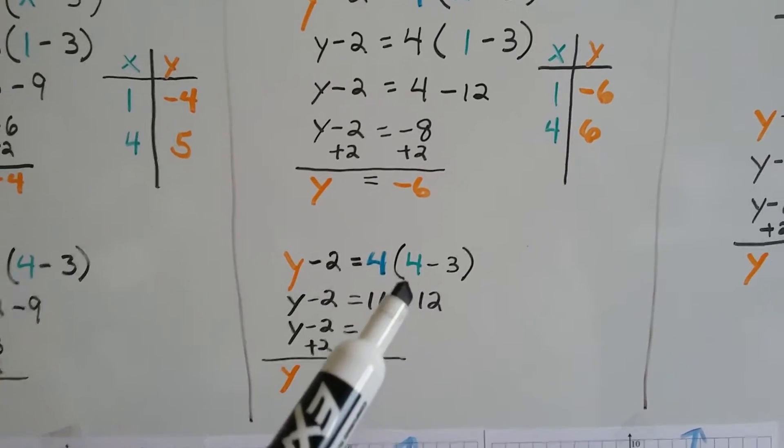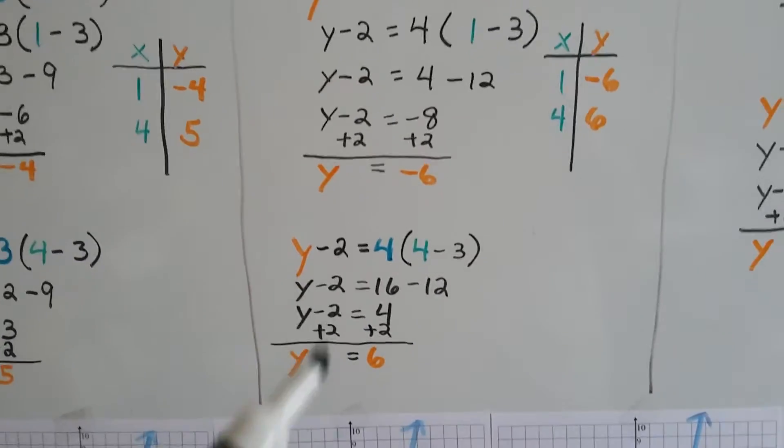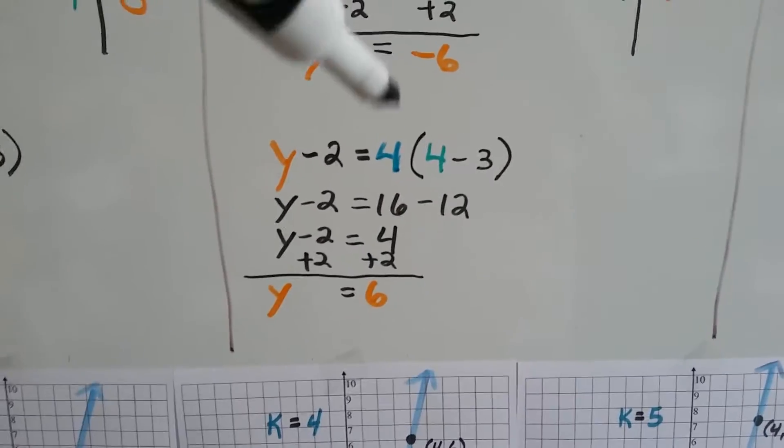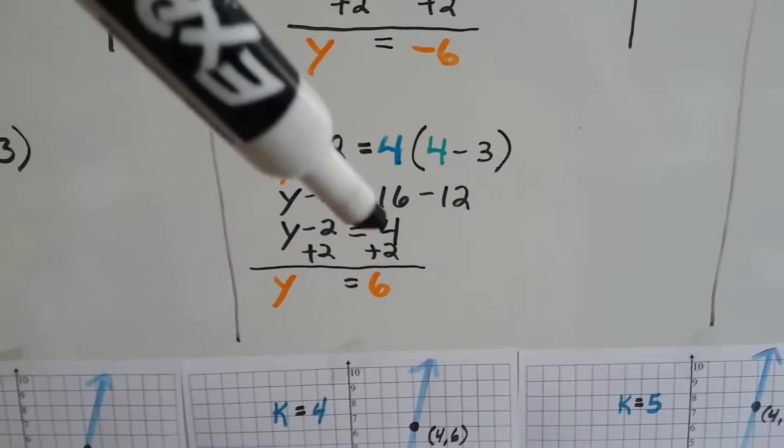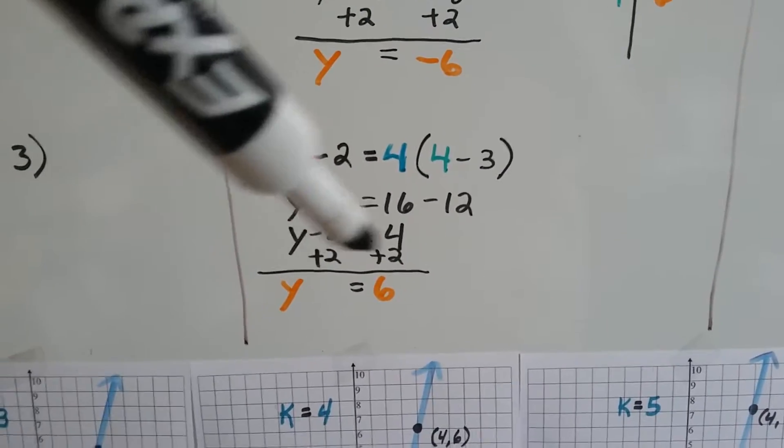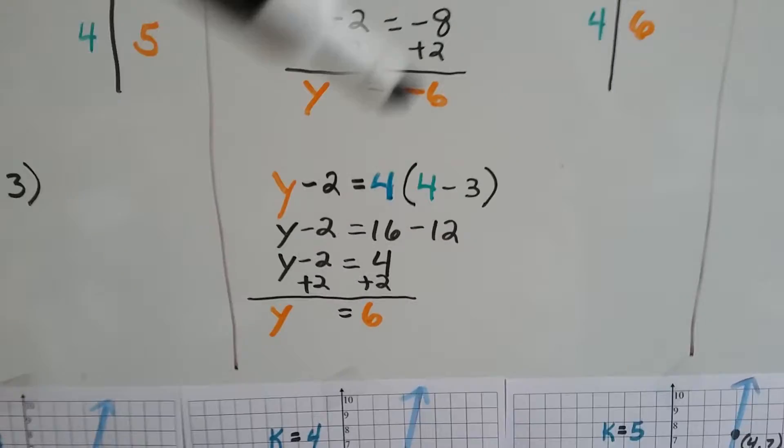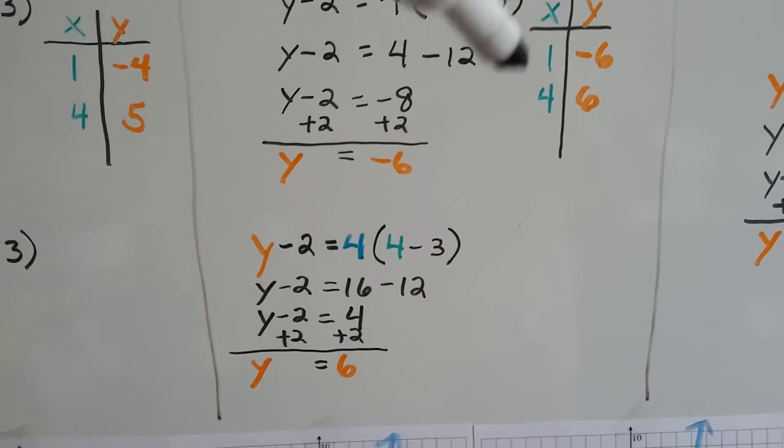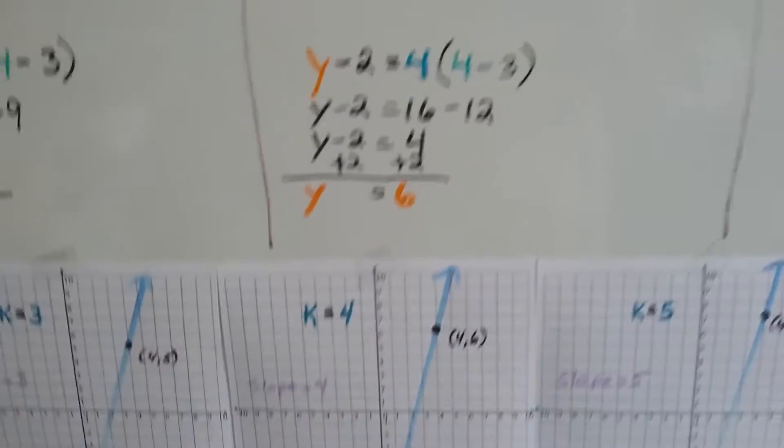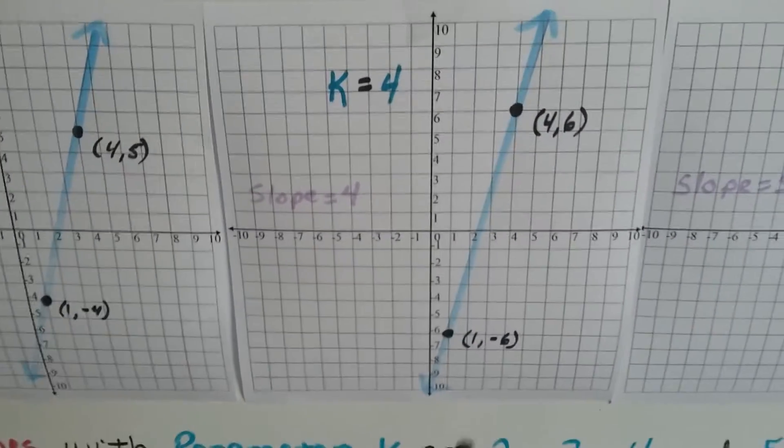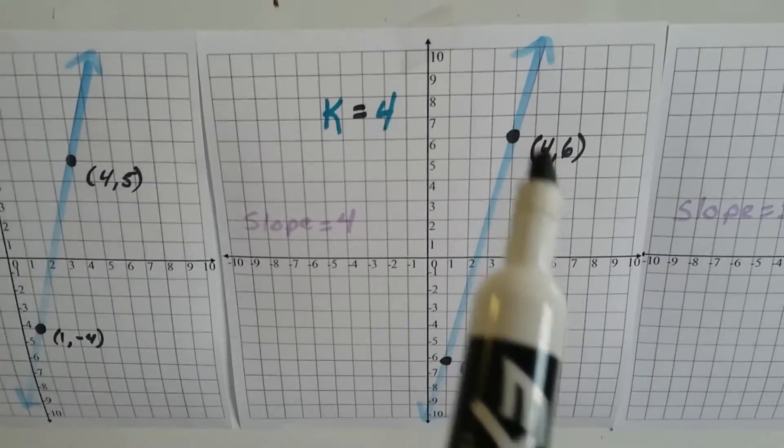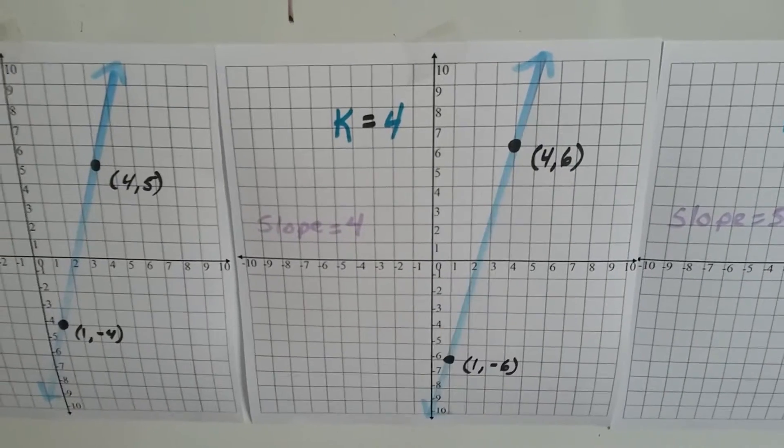I'm going to do it again and set x to equal 4, just like we did in the other ones. We're going to get 16 minus 12, that's 4. Isolating the y and adding the 2 on each side, we get y equals 6. So now we've got 1, negative 6, and 4, 6. So we can graph that. Here's our 1, negative 6, and our 4 and our 6. And we've graphed that.